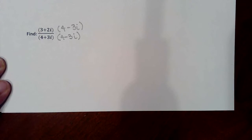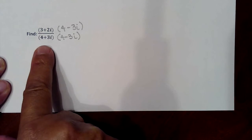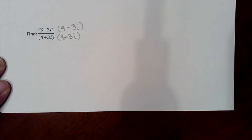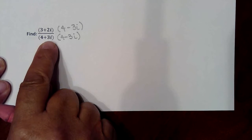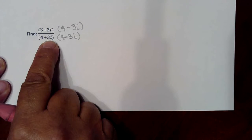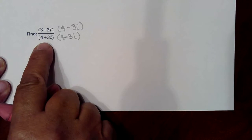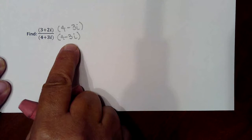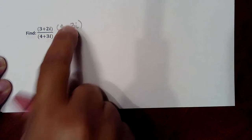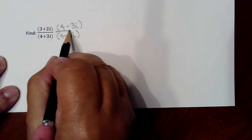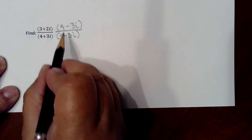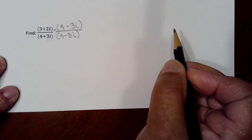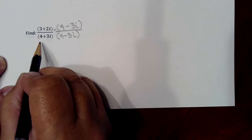This is a continuation of section 1.4 for MAC 1105. We were working on quotients of complex numbers and had decided that in order to get the radical out of the denominator we'd have to multiply by the conjugate of this binomial, which is 4 minus 3i. Deciding upon that conjugate, we also have to use it in the numerator, so we're multiplying both the denominator and the numerator by 4 minus 3i.